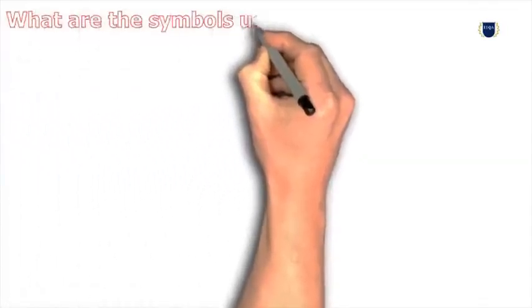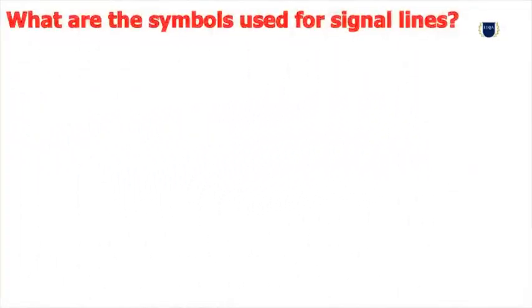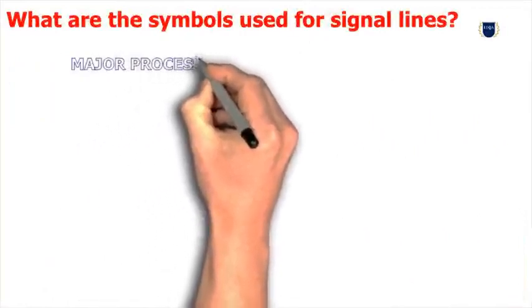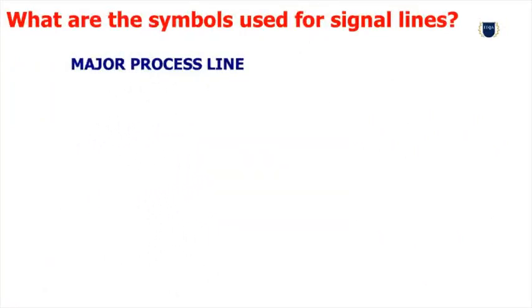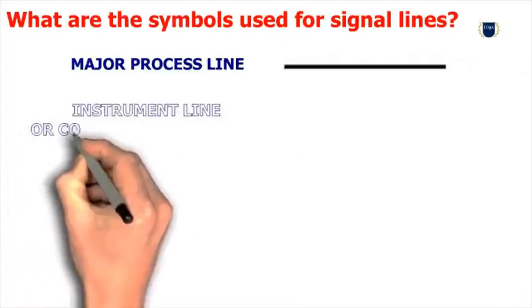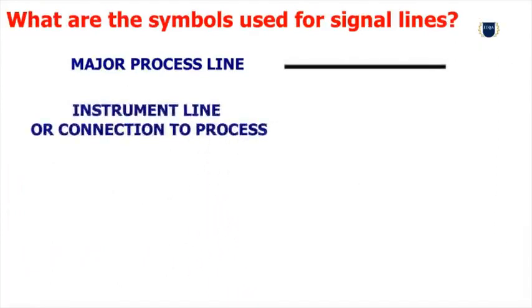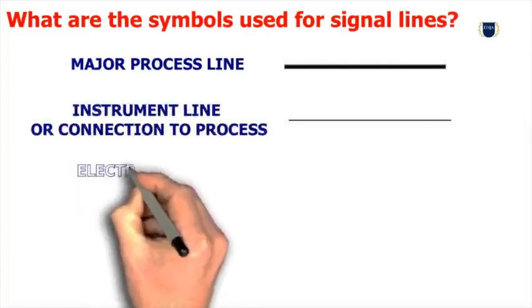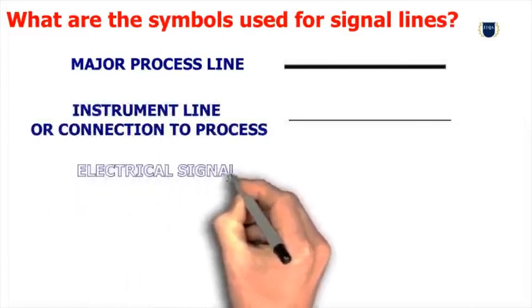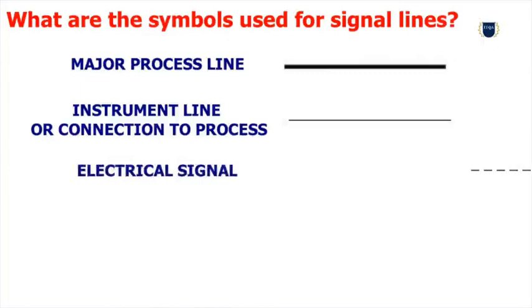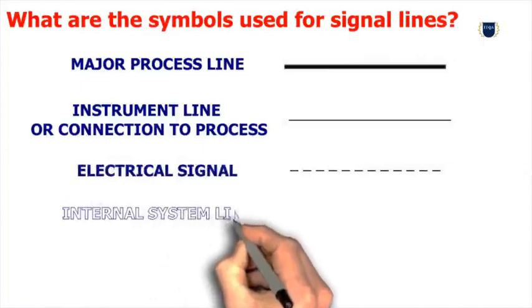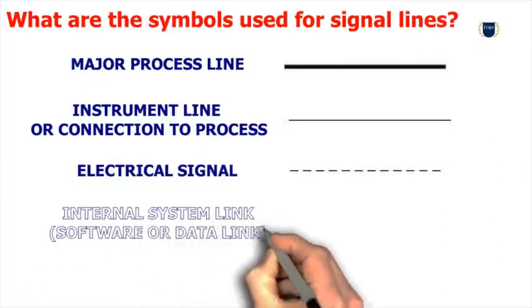What are the symbols used for signal lines? Major process line. Instrument line or connection to process. Electrical signal. Internal system link, software, or data link.